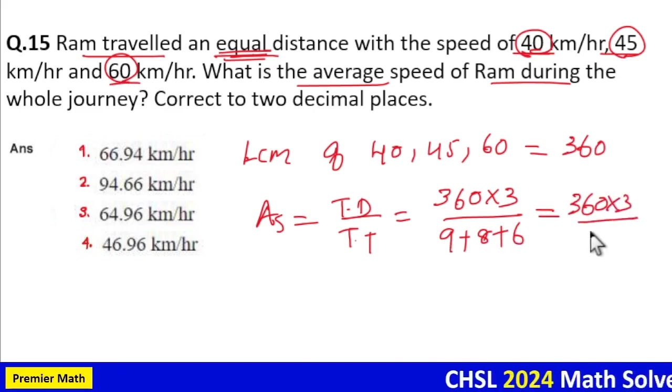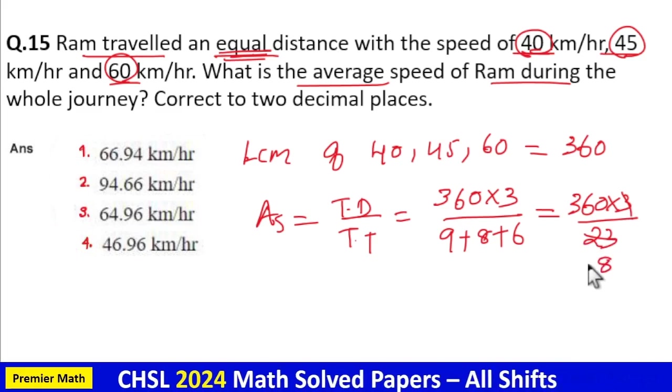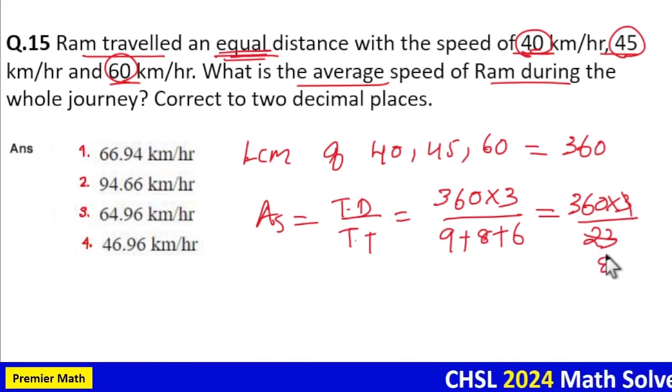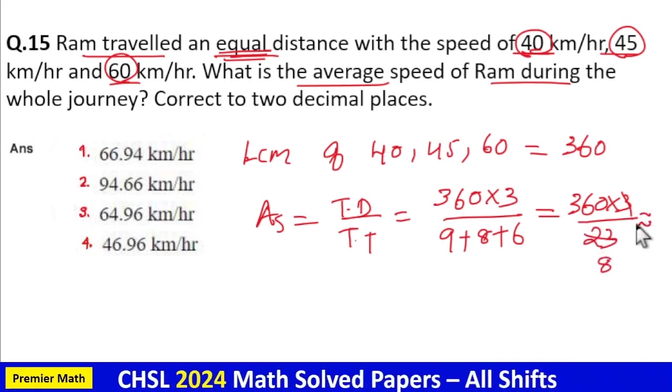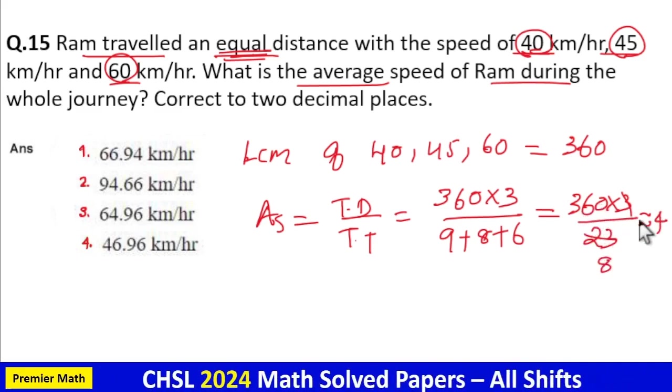Now if I consider this as 24, 3 goes 8 times in 24. Now 8 goes 4 times in 32, remaining 40, so 8 goes 5 times in 45.